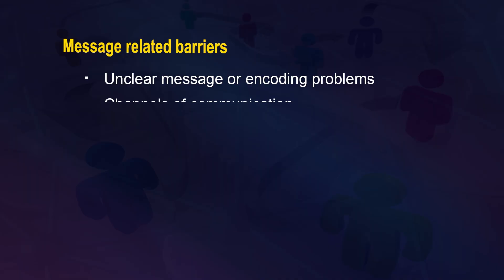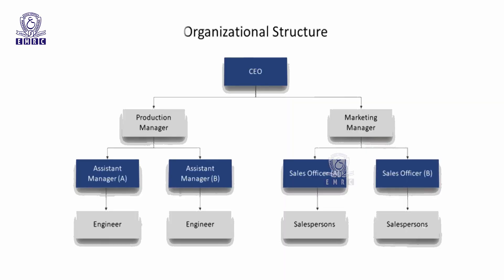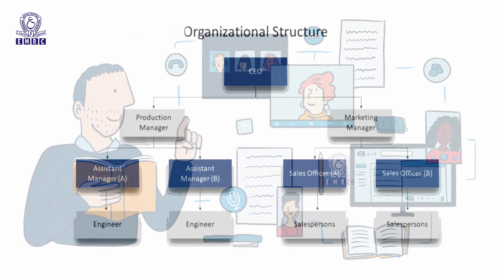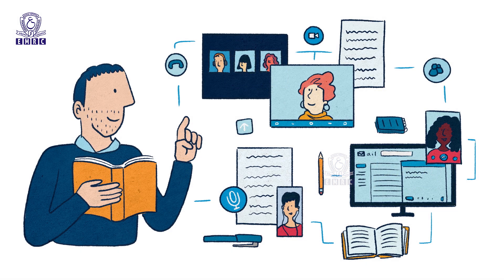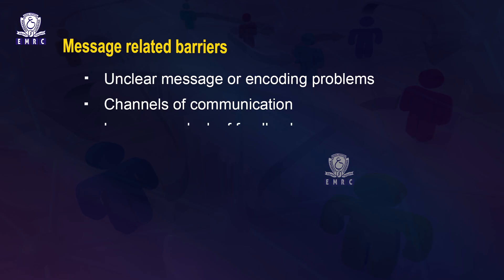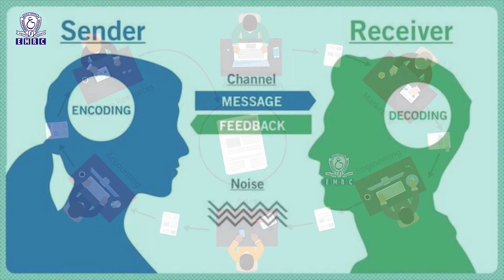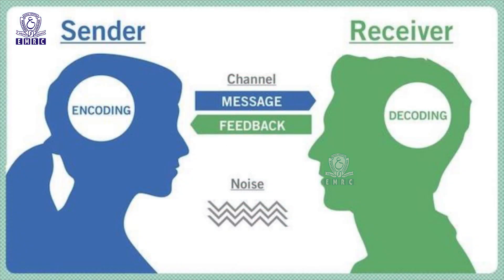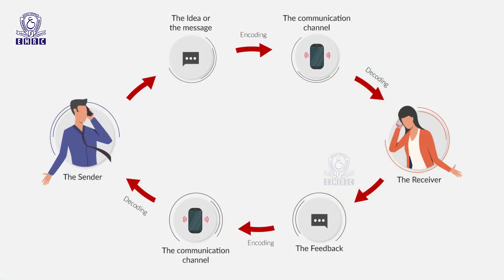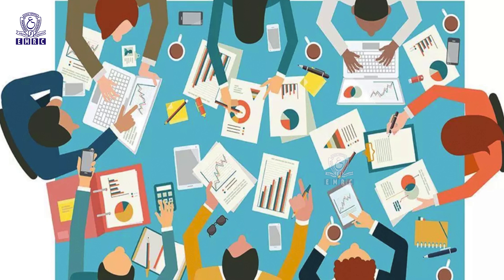The nature of the receiver should be kept in mind before preparing the message. Regarding channels of communication, transmission loss occurs when too many channels are involved between sender and receiver. For example, a message given by a CEO may get distorted before reaching the lowest managerial level if there are several people in the chain of command. Selection of an inappropriate channel of communication can also become a barrier. The process of communication is successful only after feedback is received from the receiver — without feedback, the sender experiences uncertainty regarding the appropriateness of the message.